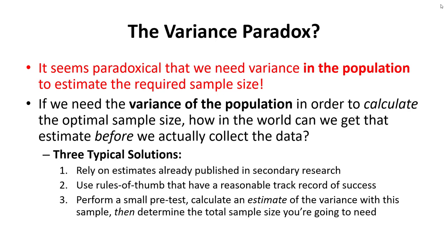There are three typical solutions to this contradiction. First, we can rely on estimates already published in secondary research. Second, we can use rules of thumb that have a reasonable track record for estimating variance. Finally, we could conduct a small pretest, collecting around 20 to 40 responses, calculate an estimate of variance from that small sample, and then complete the total sample size equation to determine how many respondents we need in total.